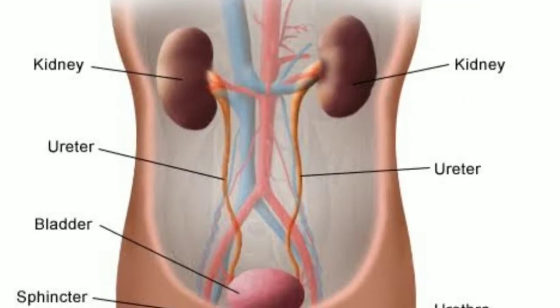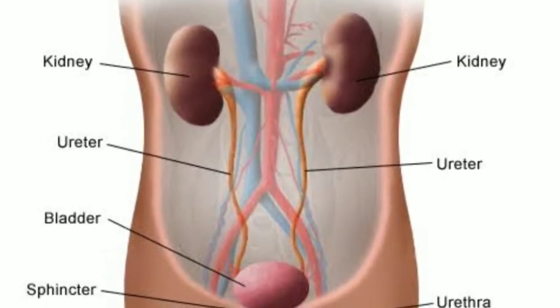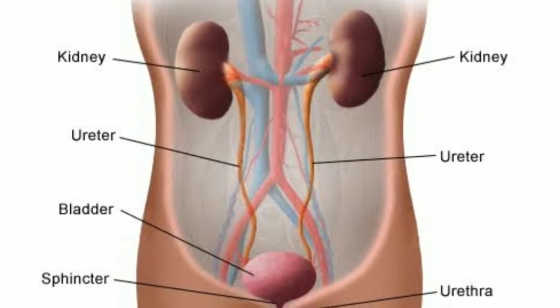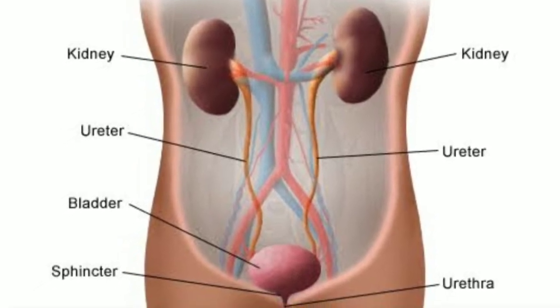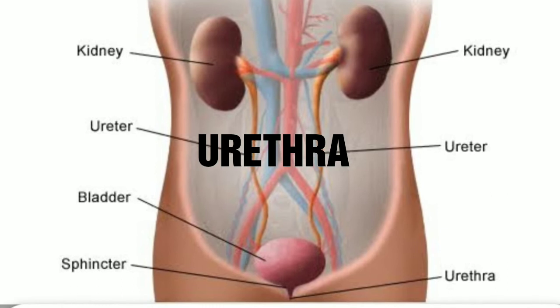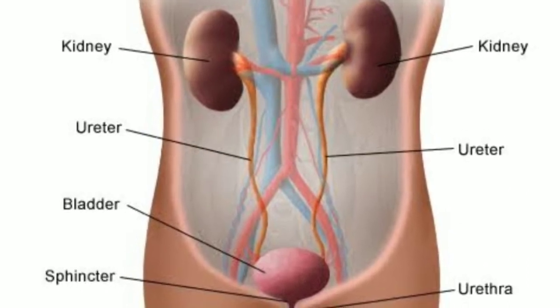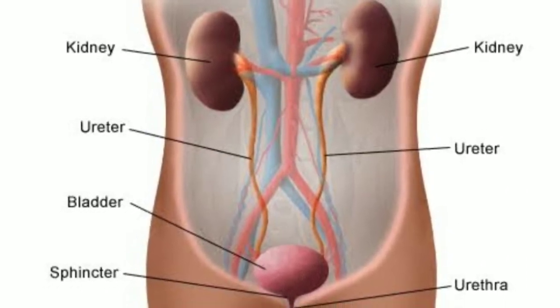The urethra is a narrow tube leading from the floor of the bladder to the exterior. In females, it is 3 to 4 centimetres long, whereas in males it is 18 to 20 centimetres long.